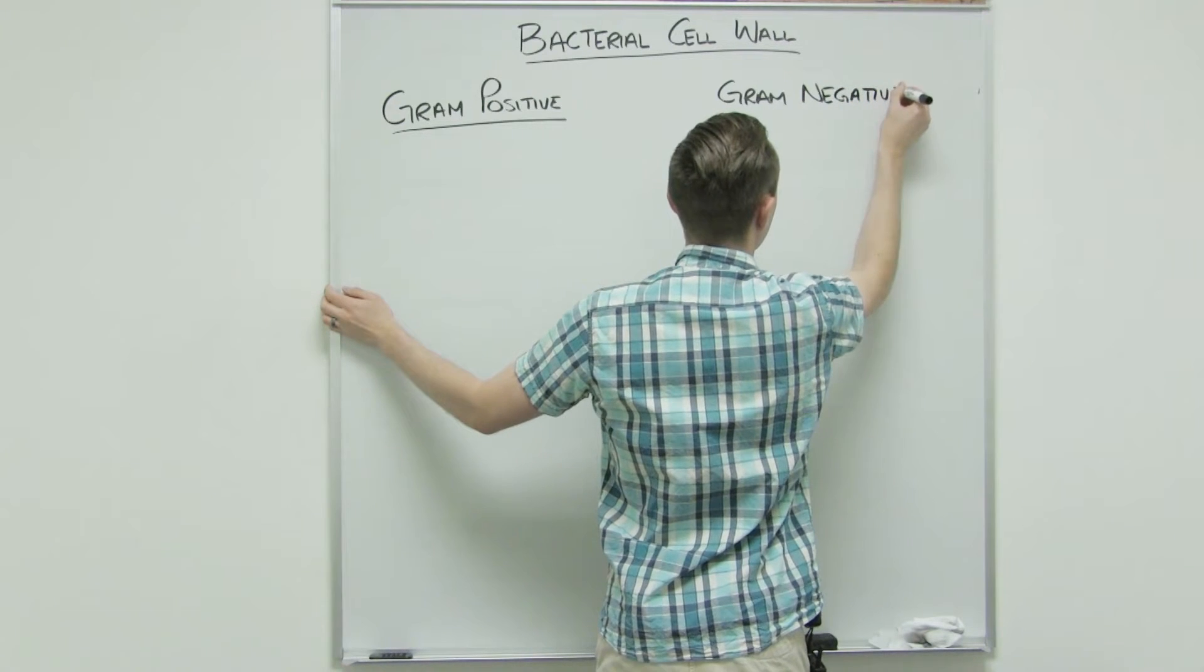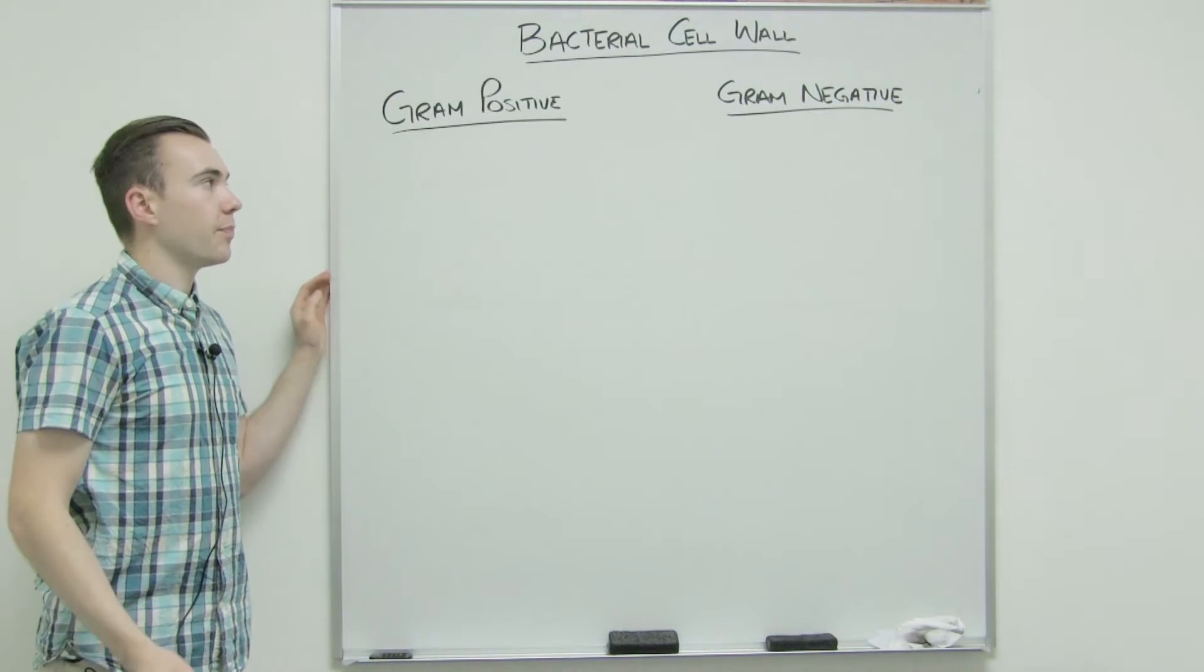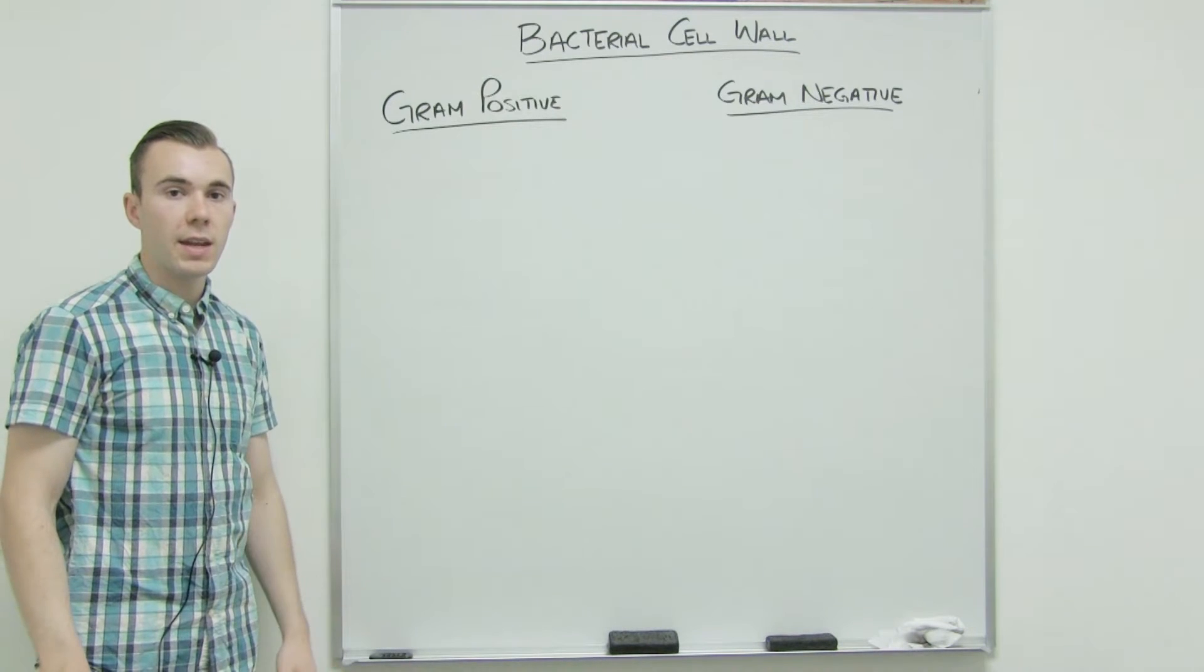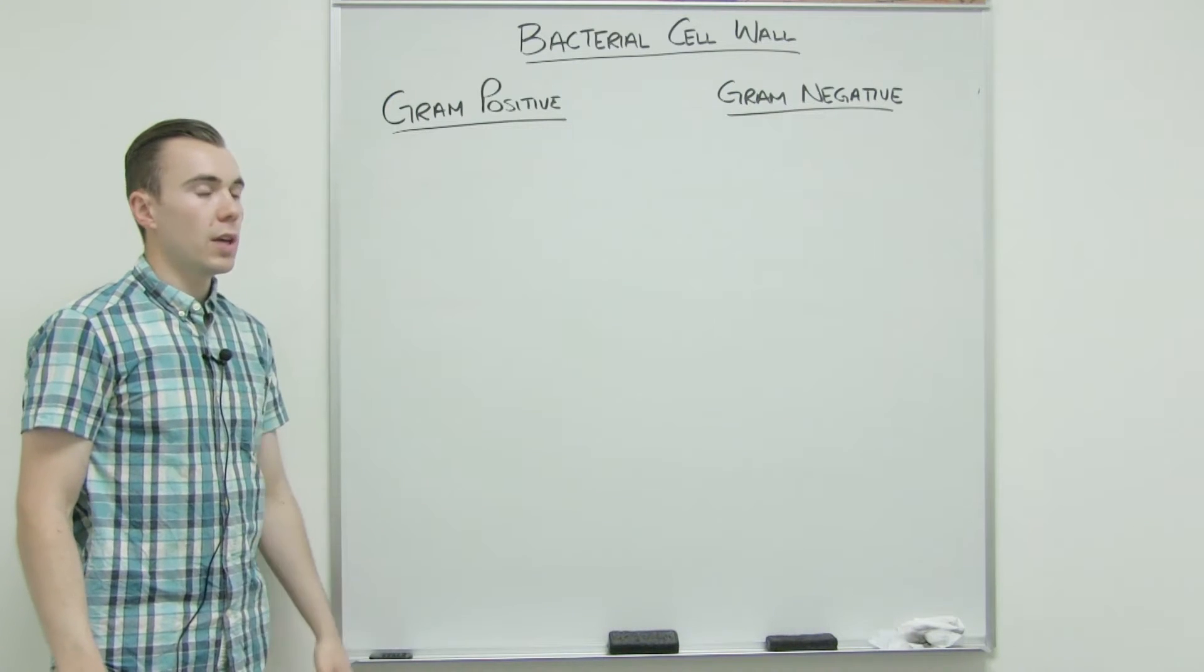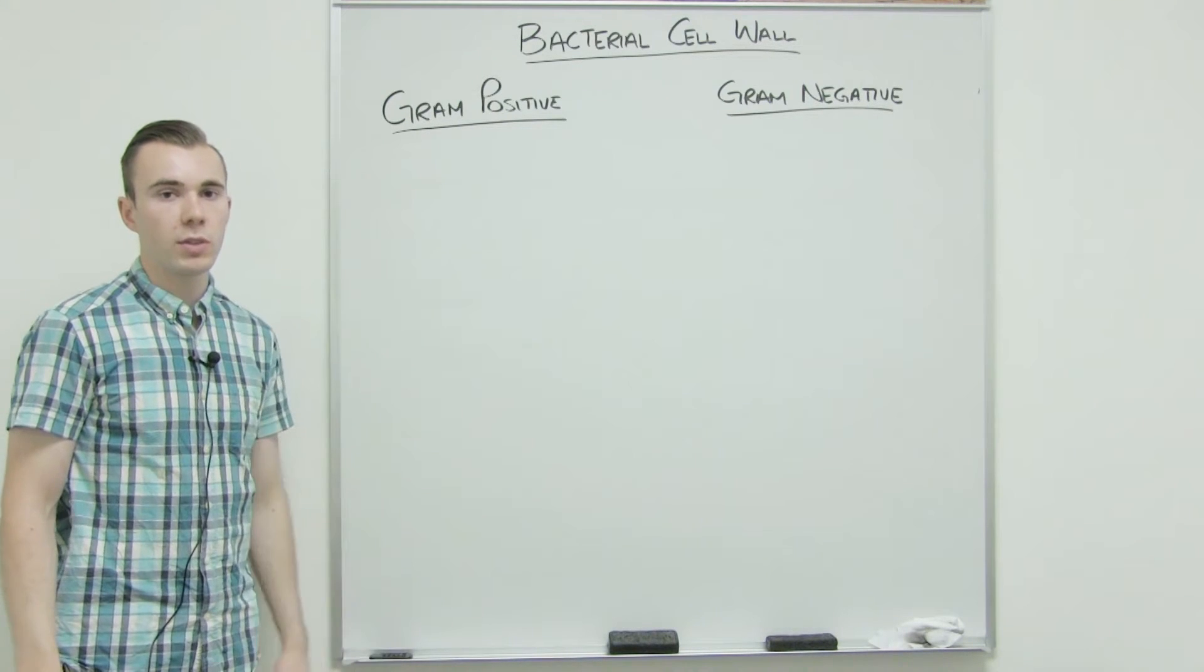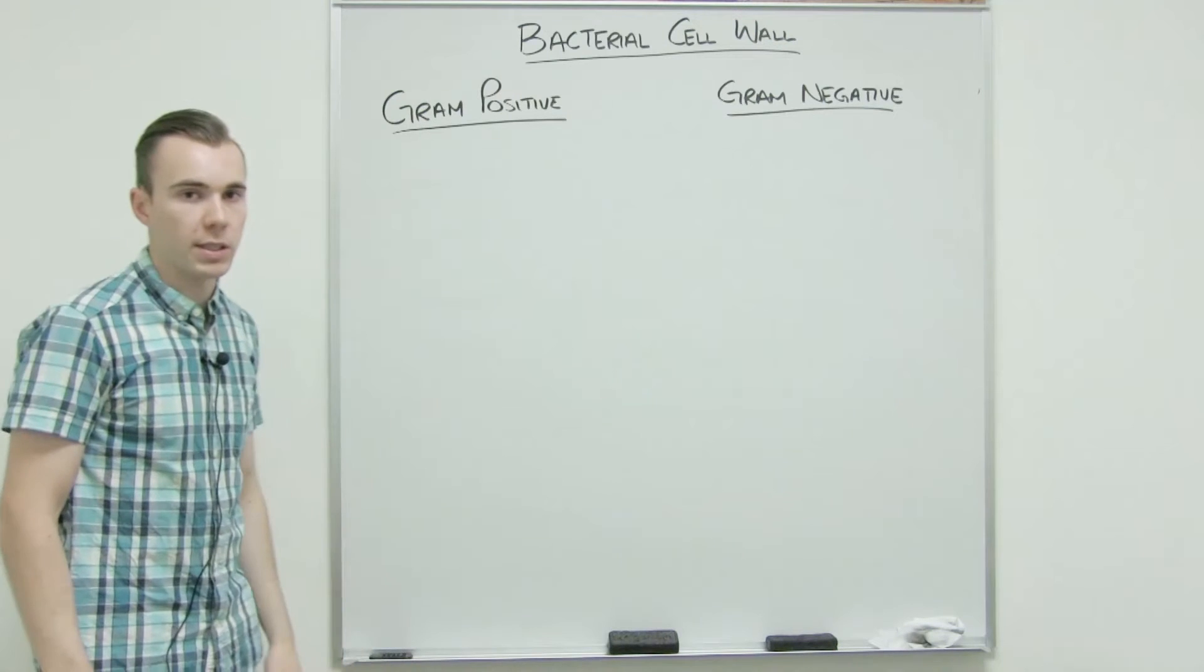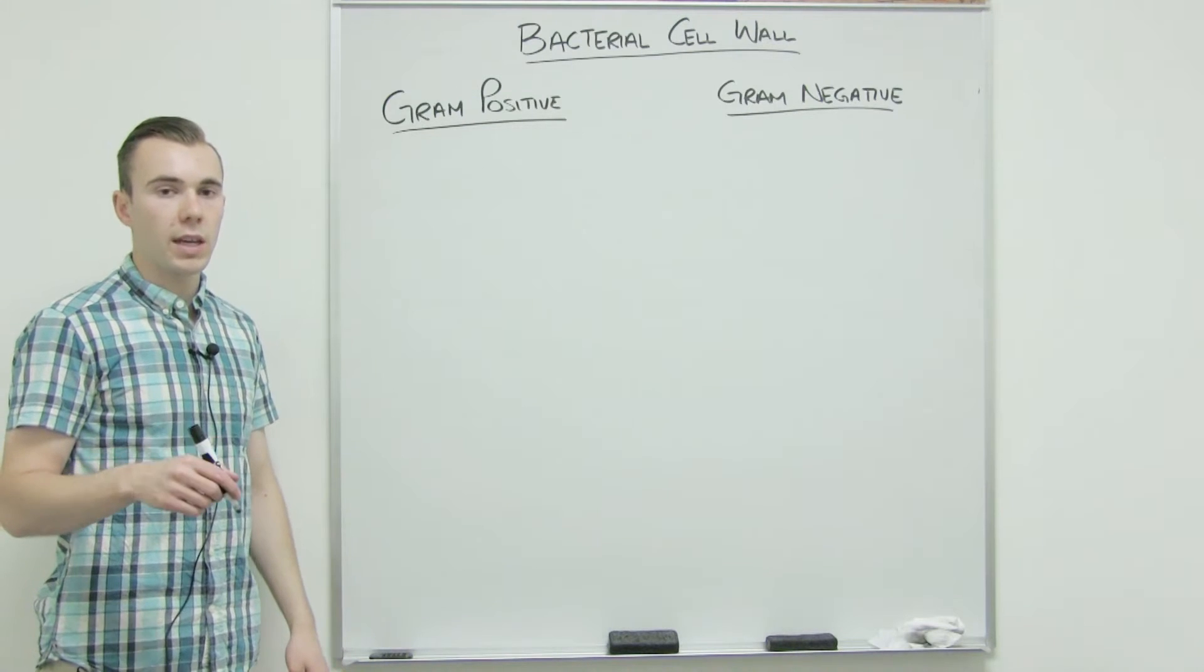Because there are two different results, we're going to have two different types of cell walls. Make sure that you realize it's called gram positive and gram negative because of the result of the gram stain and not because of the charge of the cell wall. Both of these cell walls have a net negative charge. Because the cell walls are negatively charged, the dyes that are used in the gram stain are positively charged. Don't think that positive and negative refers to the charge of the cell wall. Rather, it's because it positively retains the primary stain or it negatively retains the primary stain. Although it sounds kind of tricky, just make sure that you realize that these cell walls are negatively charged.